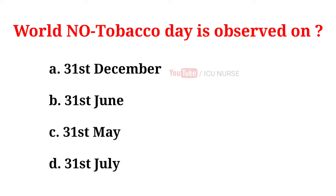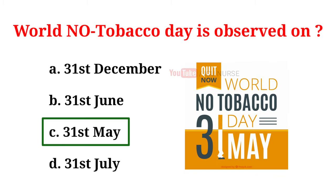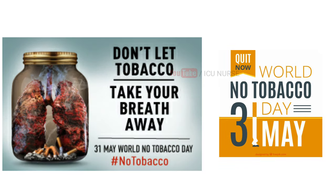World No Tobacco Day is observed on: A. 31st December, B. 31st June, C. 31st May, D. 31st July. And the correct answer is C. 31st May. World No Tobacco Day is observed around the world every year on 31st May. It is intended to encourage a 24-hour period of abstinence from all forms of tobacco consumption around the globe.